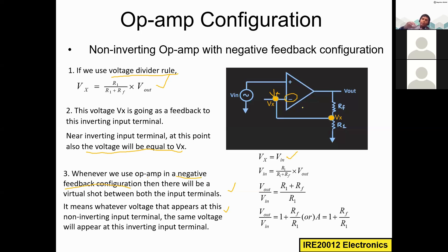The virtual short concept means these two terminals are virtually short-circuited, so we can say Vx = Vin. Now, Vin = Vx = (R1 / (R1 + Rf)) × Vout. Rearranging, Vout / Vin = (R1 + Rf) / R1. If we expand this, we get R1/R1 plus Rf/R1, which simplifies to 1 + Rf/R1.